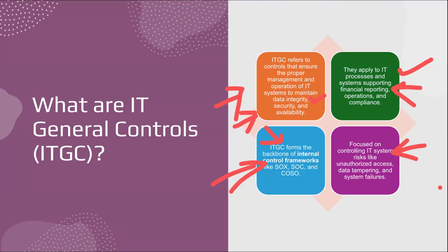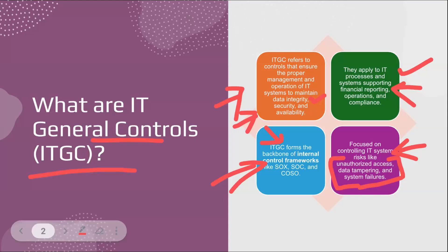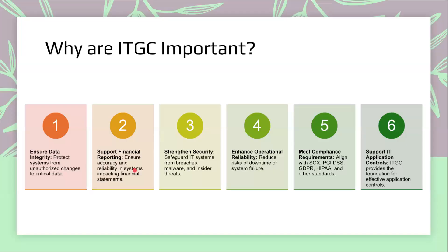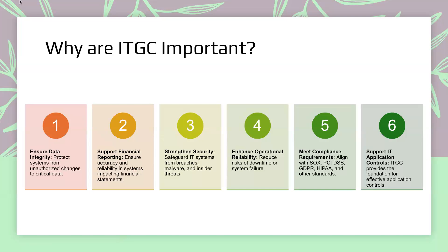The key risks addressed include unauthorized access, data tampering, and system failures. IT people can allow all of this — if they want, they can corrupt the data or provide unauthorized access. That is why IT General Controls are designed so that nobody can change any information arbitrarily. Data integrity is the most important part of a financial system.